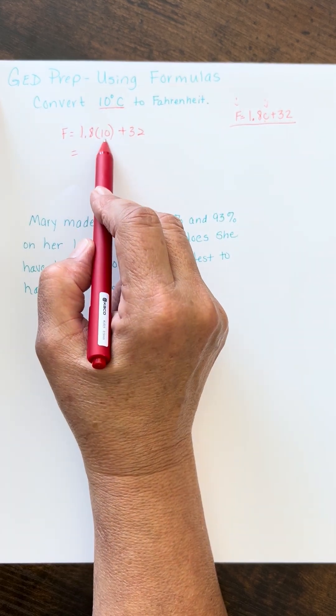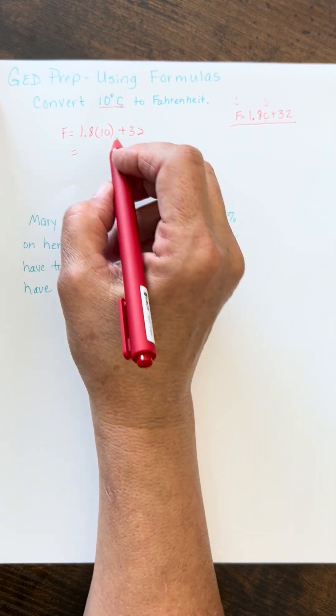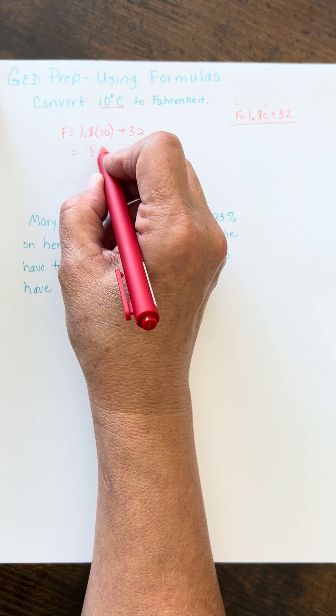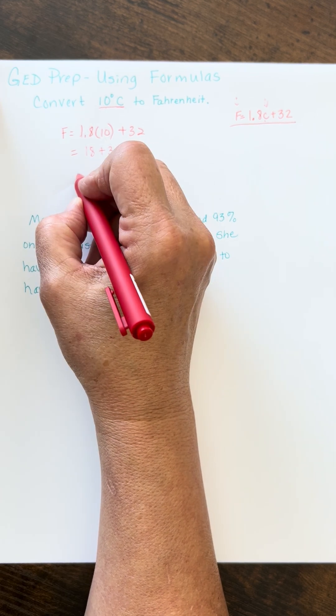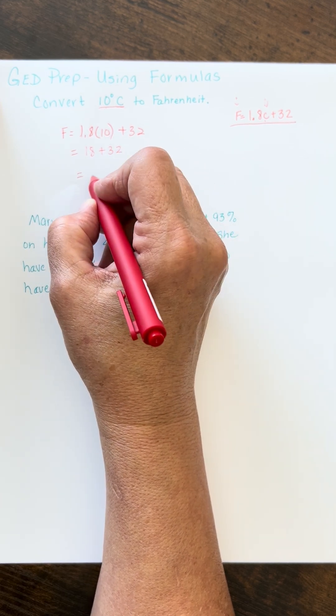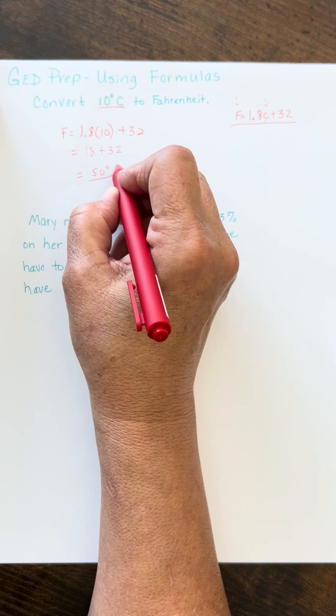Alright, 1.8 times 10 is just going to move your decimal over one place, so you have 18 plus 32, and 18 plus 32 gives you 50 degrees.